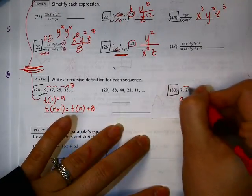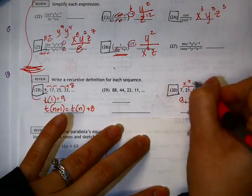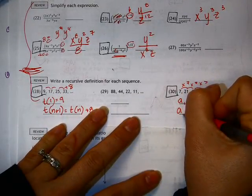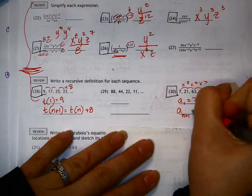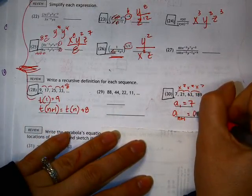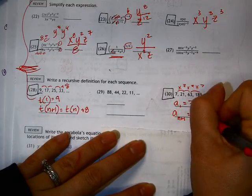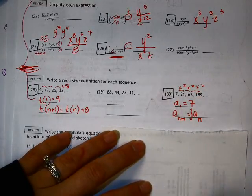Looking here, this looks to be multiplication - times 3, times 3, times 3. So to find the next term, you take the one before it and times it by 3.